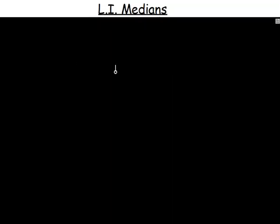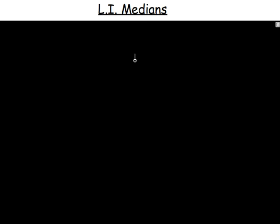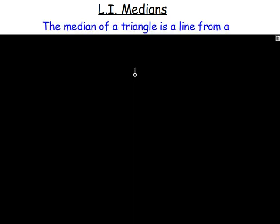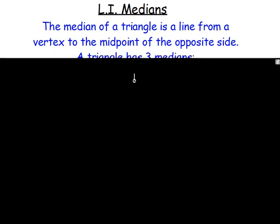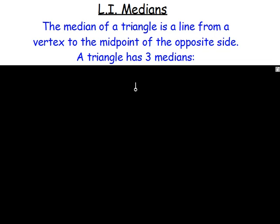What is a median? If you think back to first year, second year when we were looking at averages, we dealt with the mean, the median, the mode, and the range. The median was when you put the numbers in order and took the one in the middle. It kind of applies here — a median is a line that goes from a vertex of a triangle to the midpoint of the opposite side. A triangle will have three medians.